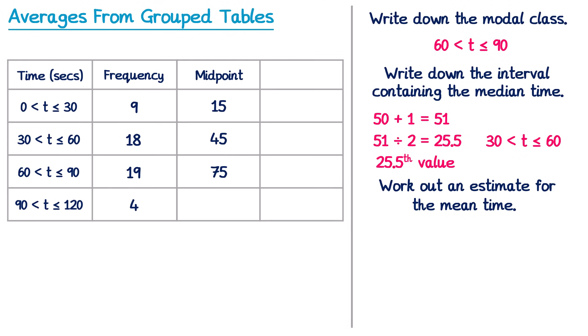Then we multiply the midpoints by the frequencies to create the final column. 9 times 15, that gives you 135. 18 times 45 is 810. 19 times 75 is 1425, and 4 times 105 is 420.